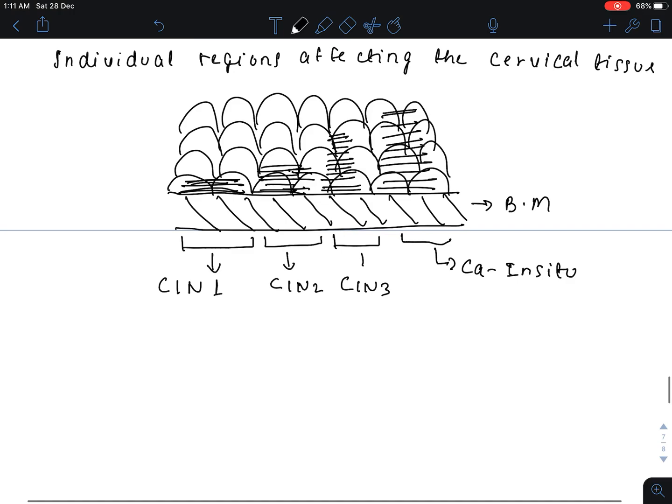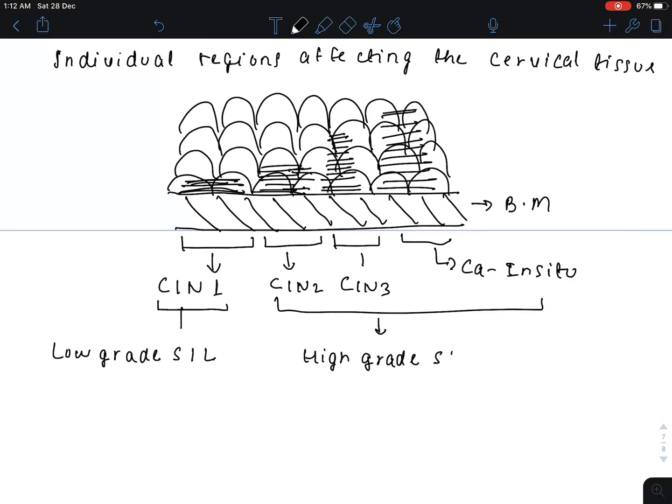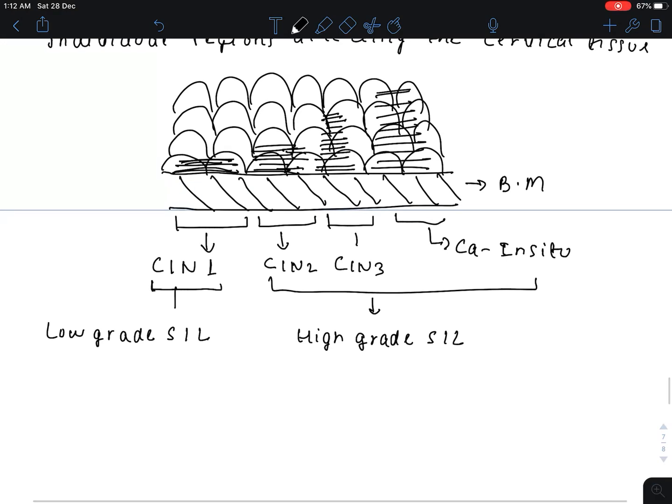Now we classify cervical intraepithelial neoplasia into two groups: low-grade squamous intraepithelial lesion (LSIL) and high-grade squamous intraepithelial lesion (HSIL). In LSIL there is CIN1 involvement of the lowest layer of cells.